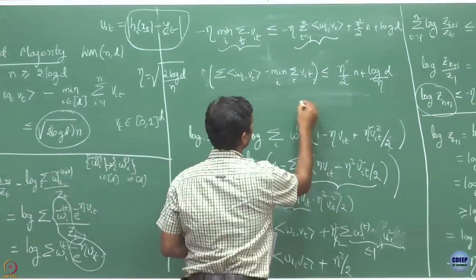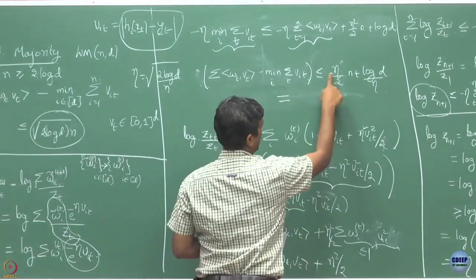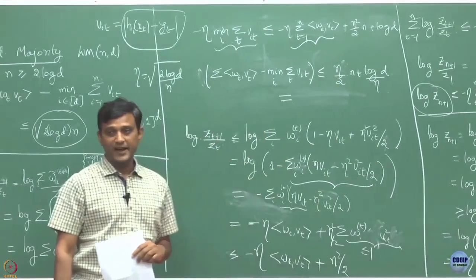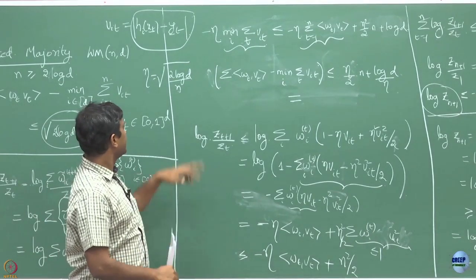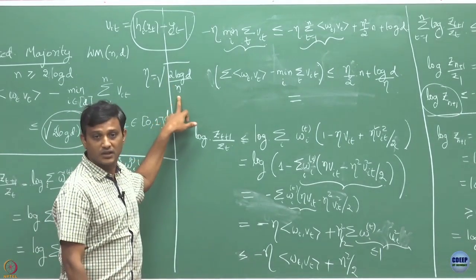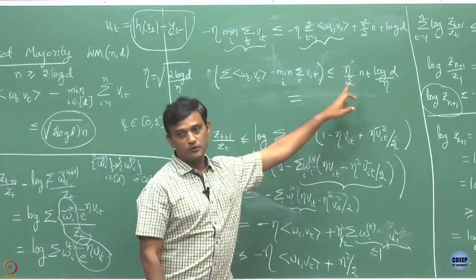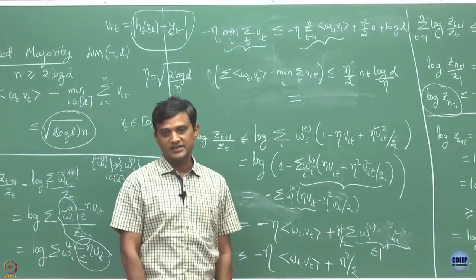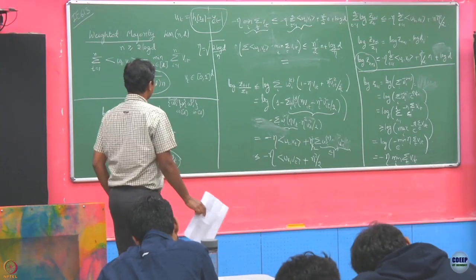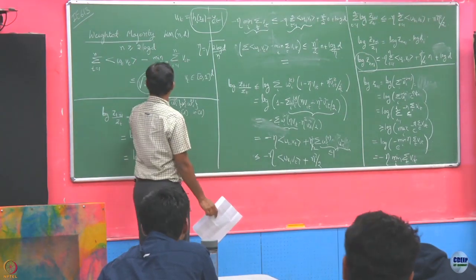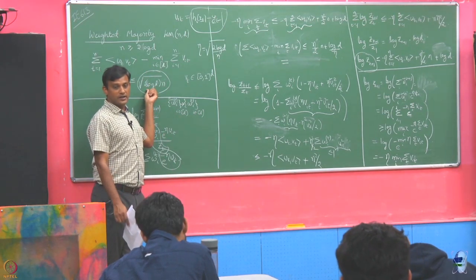I will take the minimum term to the left-hand side and the regret terms together. Then dividing throughout by eta (which is positive, so the inequality is preserved), I get the expected regret upper bounded by log d over eta plus eta times n over 2. Now substituting the specific value eta equals square root of log d over n, can you verify this gives 2 times square root of n log d, which matches the bound stated.